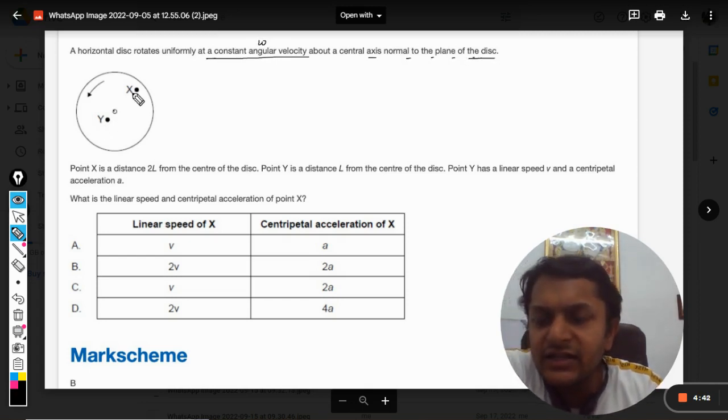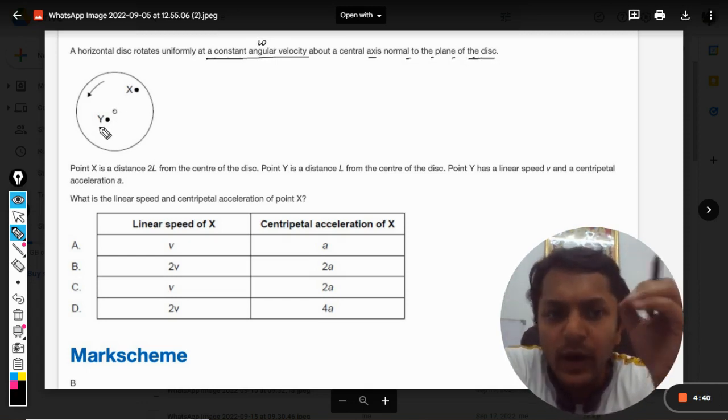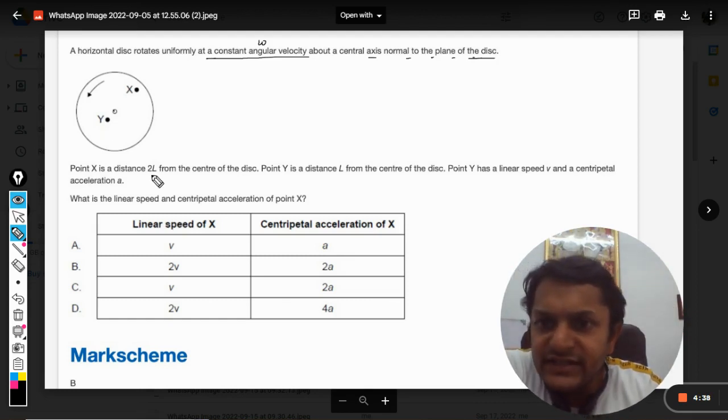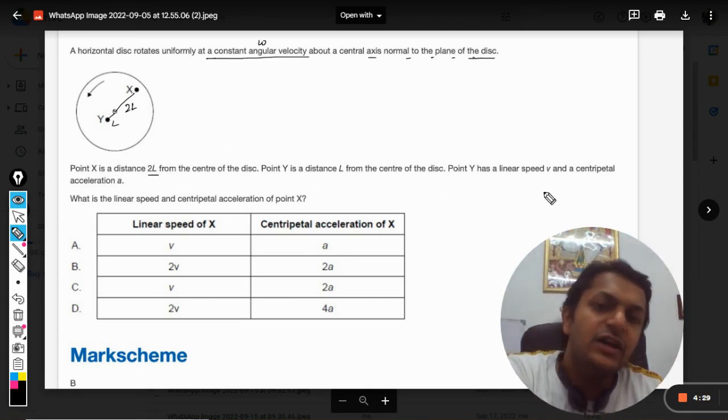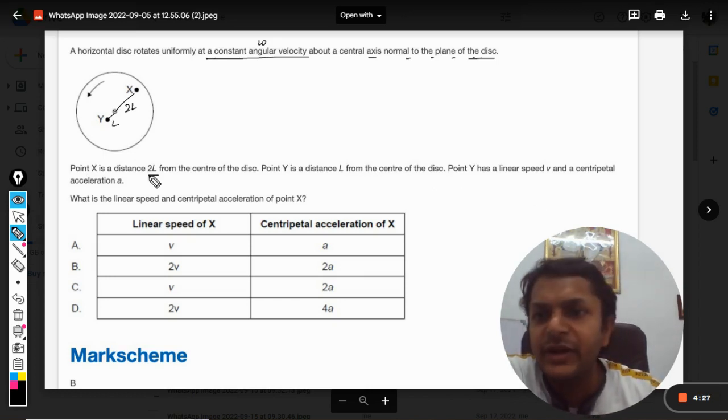There are two points, one is X and another is Y. Point X is at the distance of 2l, and point Y is at the distance of l from the center of the disc. Point Y has a linear speed v.